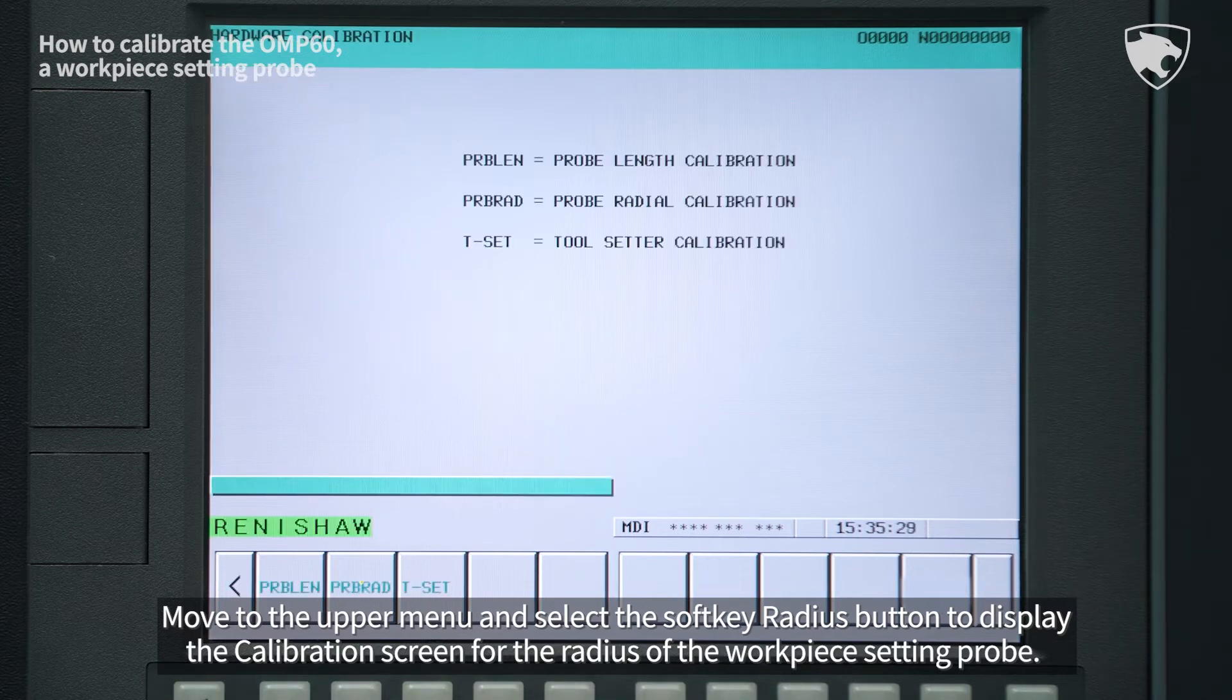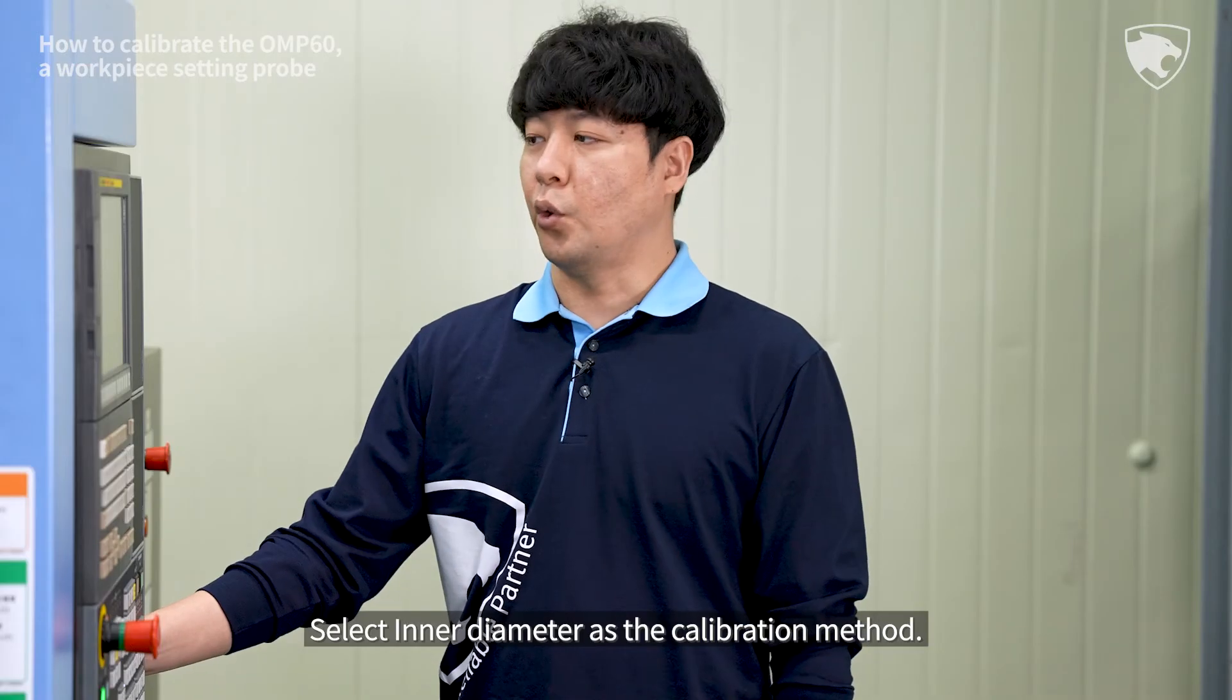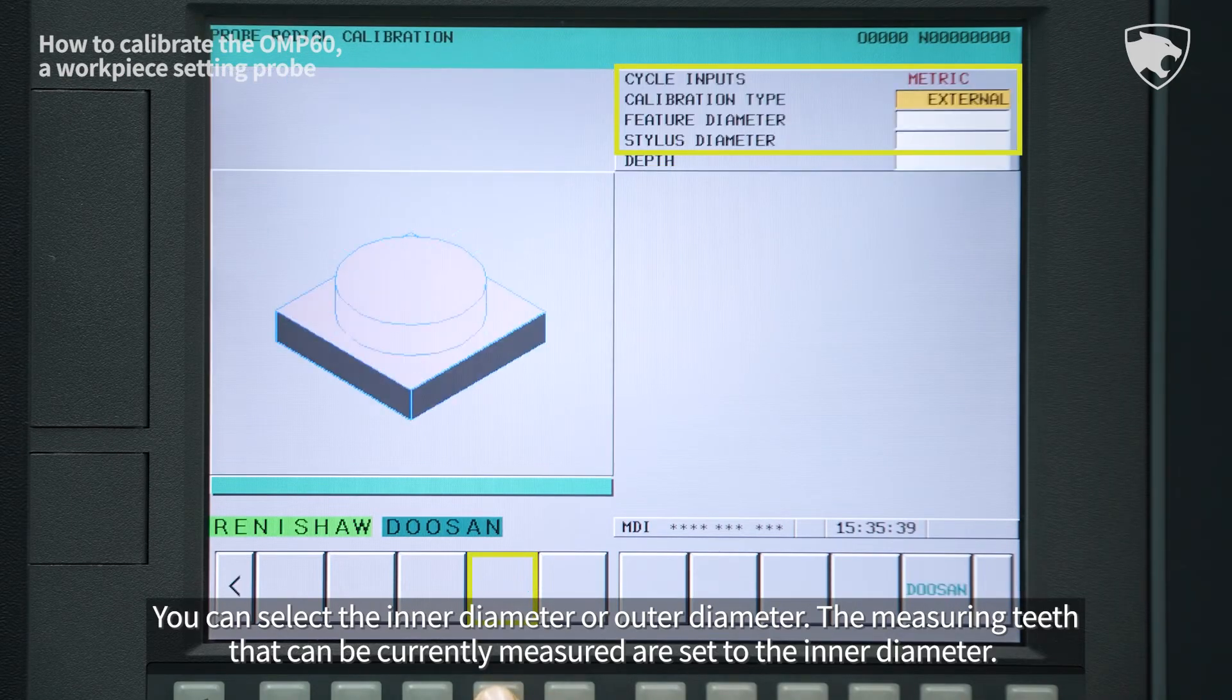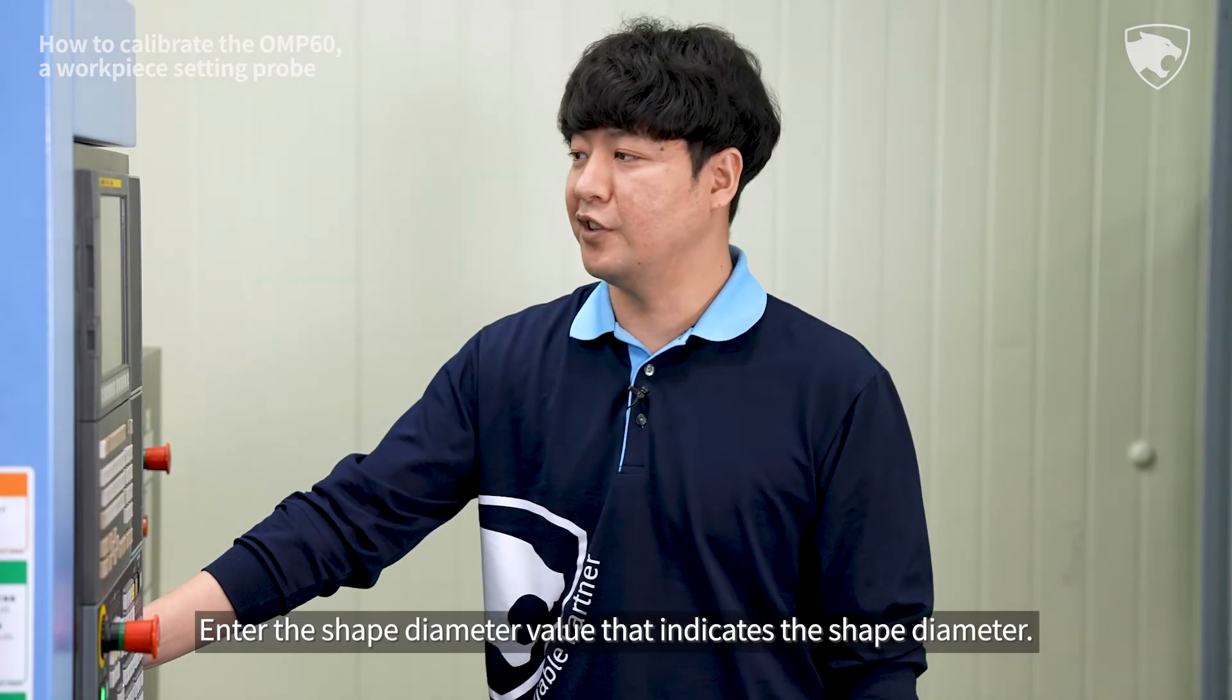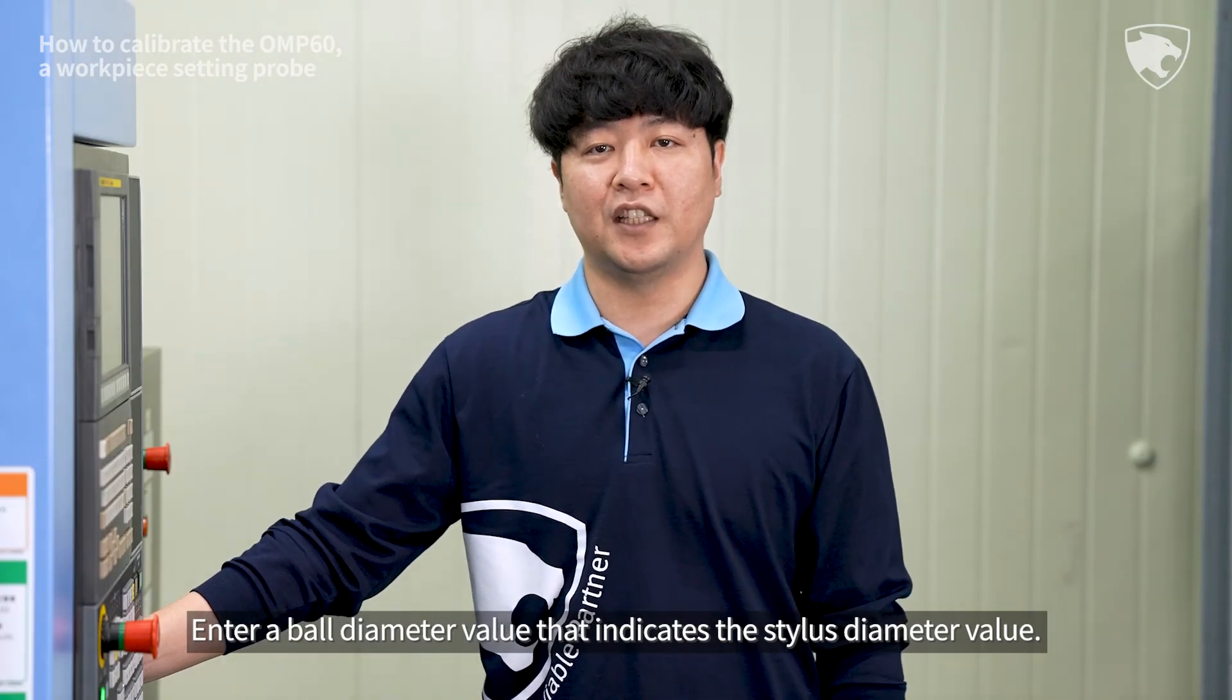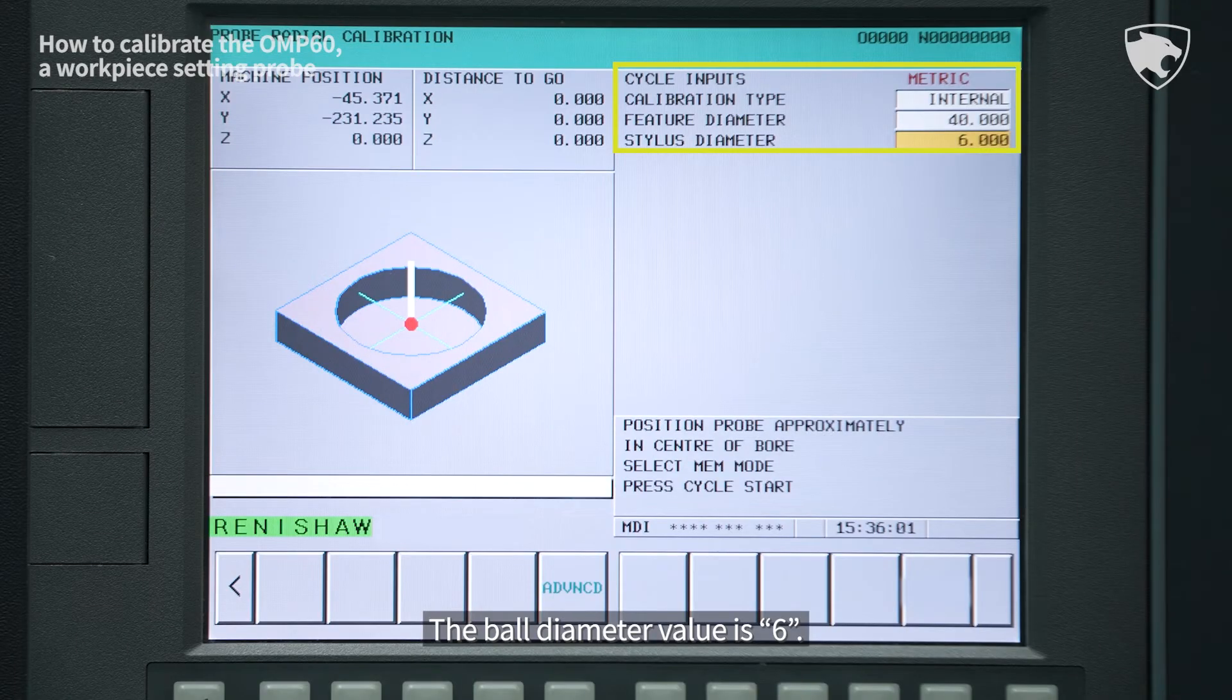Move to the upper menu and select the soft key radius button to display the calibration screen for the radius of the workpiece setting probe. Select inner diameter as the calibration method. You can select the inner diameter or outer diameter. The measuring teeth that can be currently measured are set to the inner diameter. Enter the shape diameter value of 40. Enter a ball diameter value that indicates the stylus diameter value of 6.